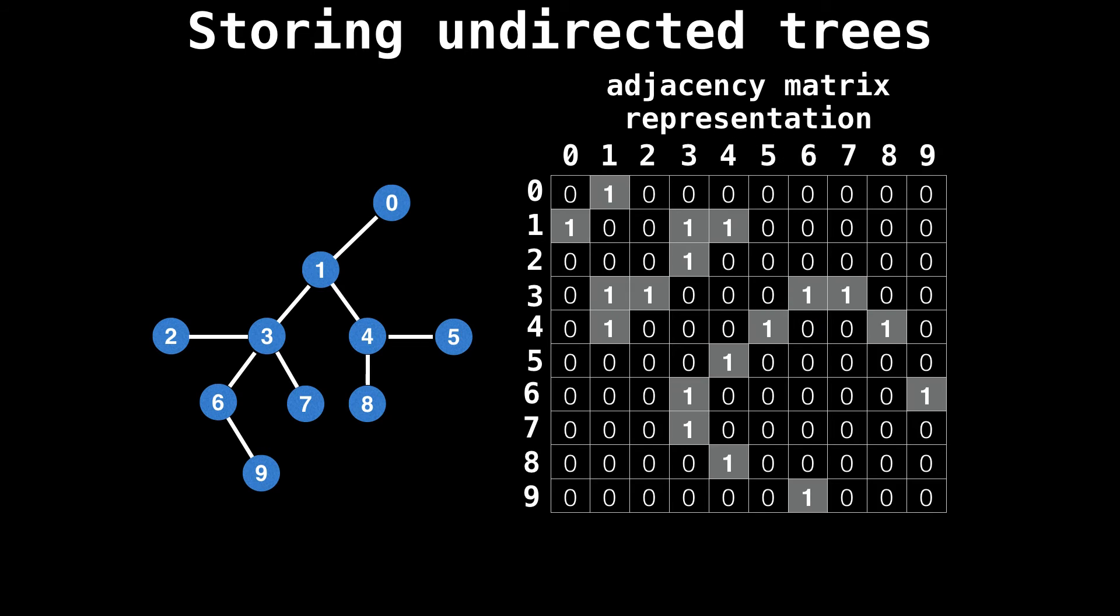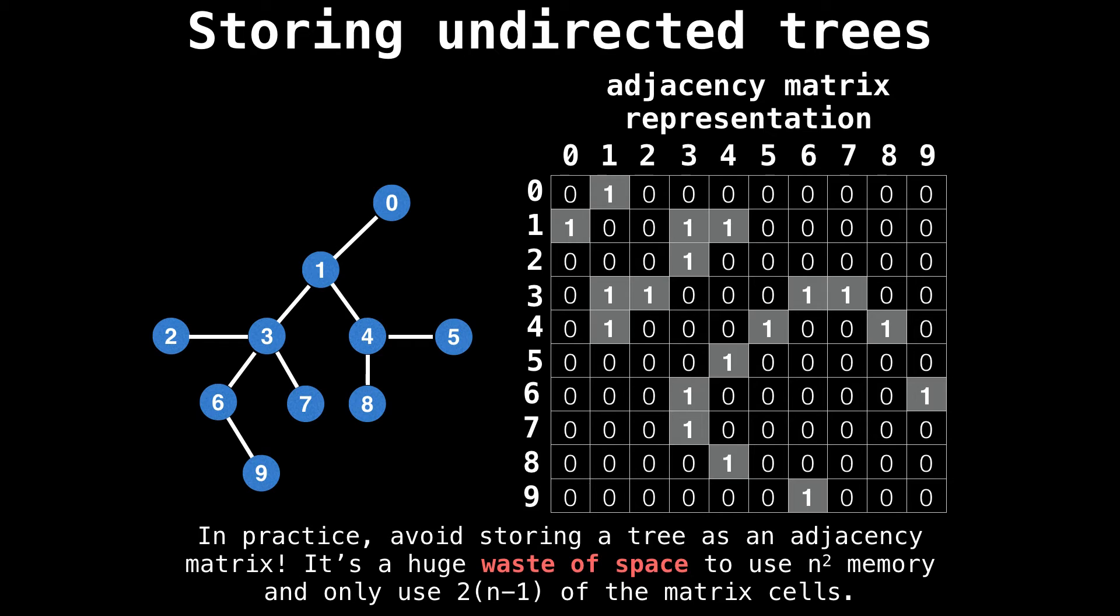You can also store a tree as an adjacency matrix of size n by n, where having a one in a particular cell means that the nodes corresponding to the row column values have an edge between them. However, in practice, I would say to always avoid storing a tree as an adjacency matrix because it's a huge, huge waste of space. You would not ever want to allocate n squared memory and only use roughly two n of the matrix cells. It just doesn't make sense.